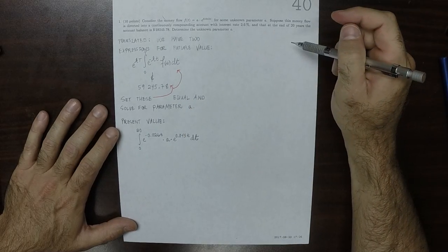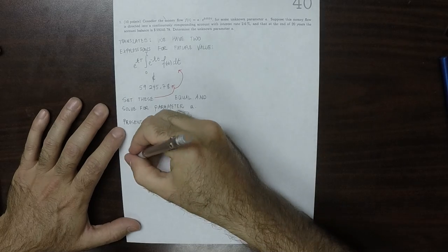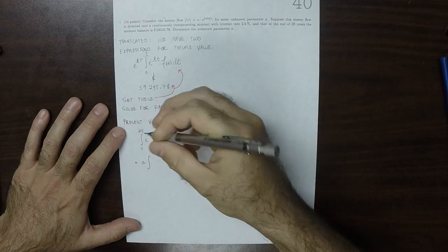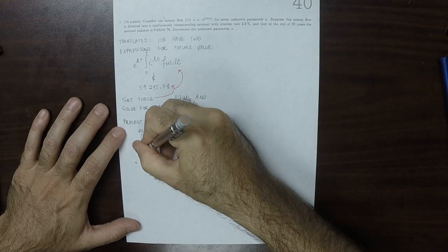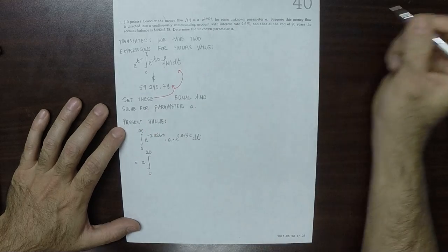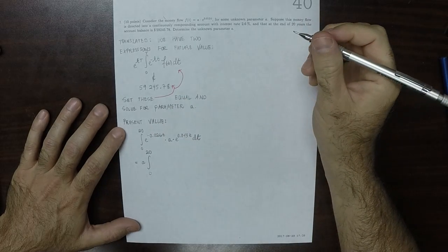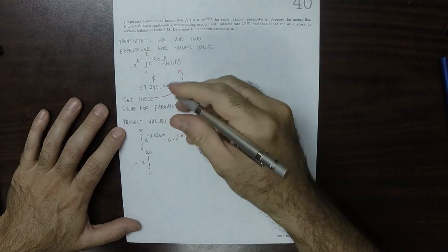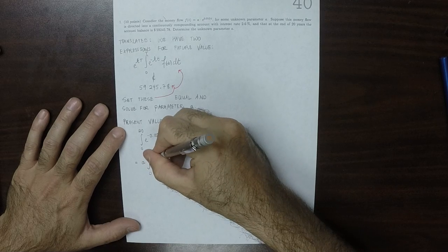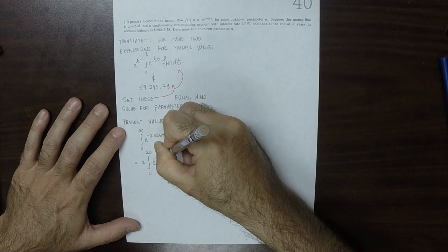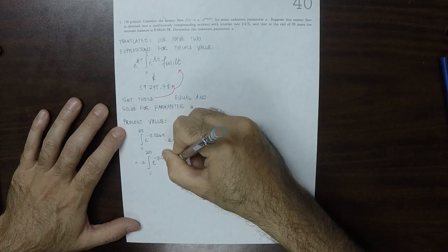So now, A is a constant, so it can be factored out. So that's A multiplied by the integral 0 to 20. And then the exponentials can be combined by just adding them up. The difference is negative 0.013 t, dT.